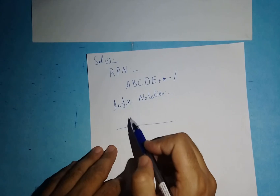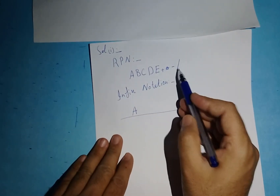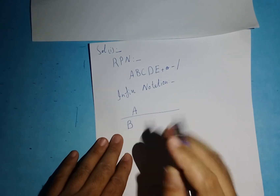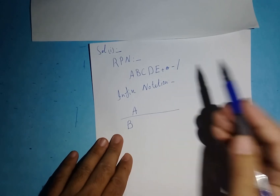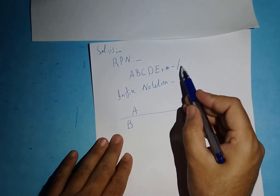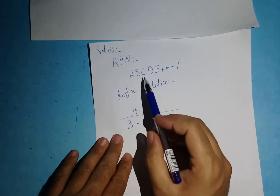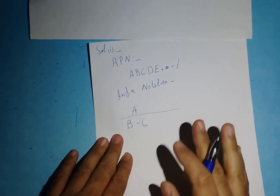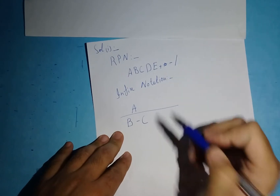I've taken the first variable 'a' and the rightmost sign, divide. Now I go back to the variables — the second variable is 'b', so I write it down here. After division, the next sign from the right is minus, so I write down the minus sign. Then I go back to variables — the third variable is 'c', so I write it down here.